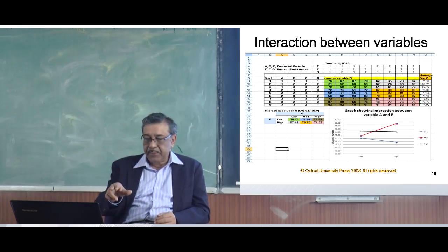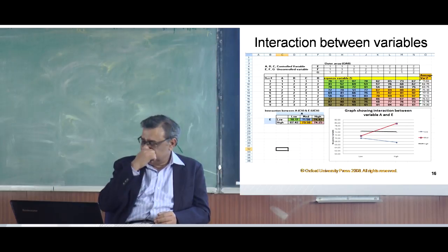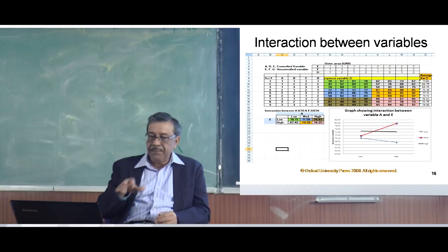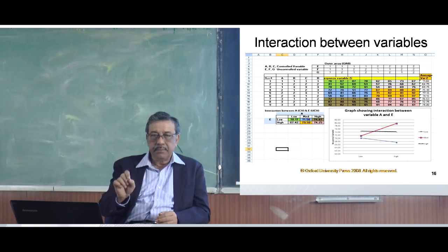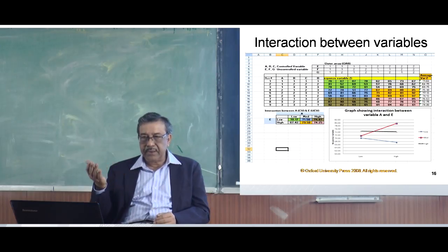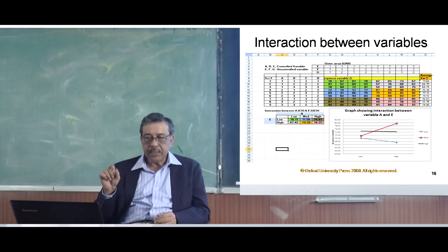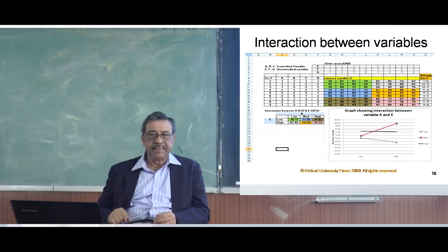Taking another example: we look at the orange-colored cell where a is medium and e is high — the value is 79.5. You go to the upper table, look at the cells in orange, take their average, and place it in this cell. Likewise, all 6 cells in the interaction table are filled in this way.